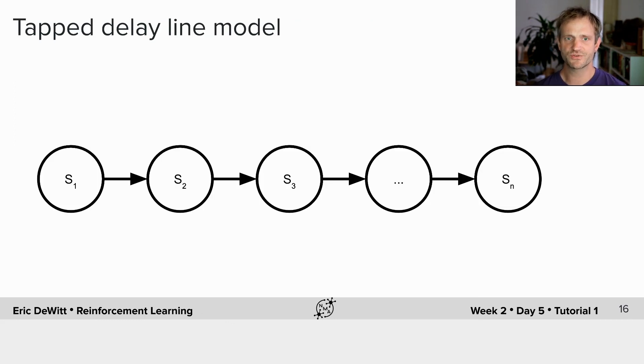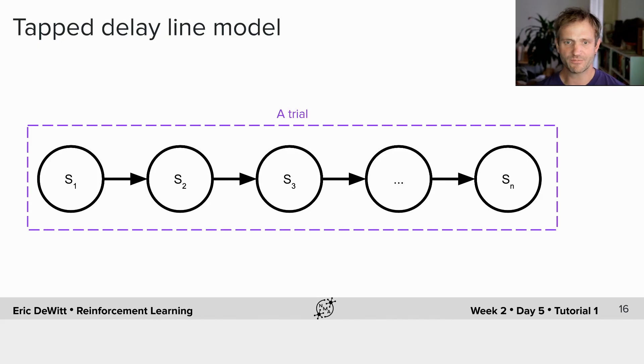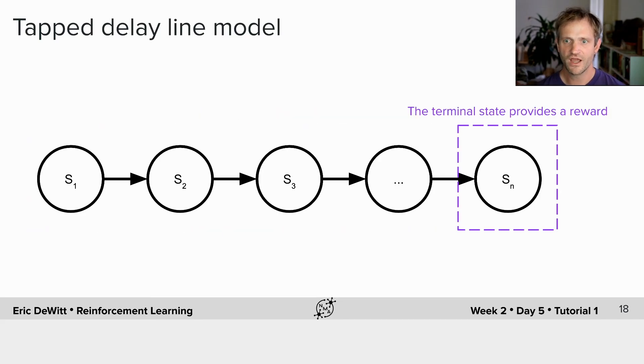To model this, we're going to use something called a tapped delay line. A tapped delay line is basically a trial, capturing all of the states as though you were progressing through them, representing time. So the cue and time are combined into this series of states, and there's a terminal state at the end which provides a reward.